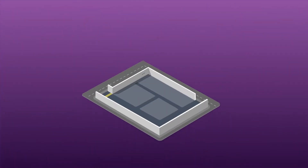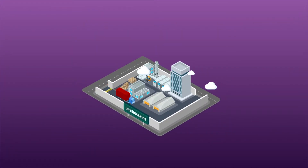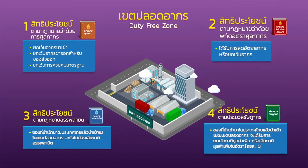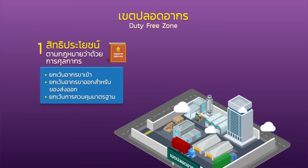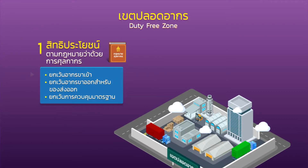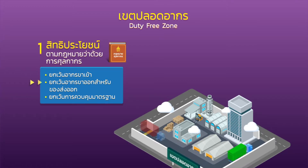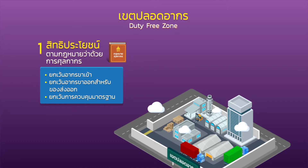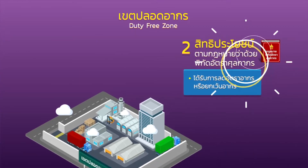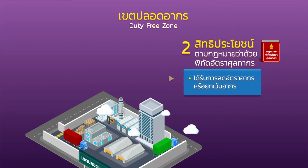There are four types of privileges for goods imported into the kingdom to be brought into a duty-free zone. First, privileges under the Customs Law — for instance, exemption of import duty, exemption of export duty for exported goods, exemption of standard control, etc. Second, privileges under the Law on Customs Tariff — for instance, duty rate deduction or duty exemption.